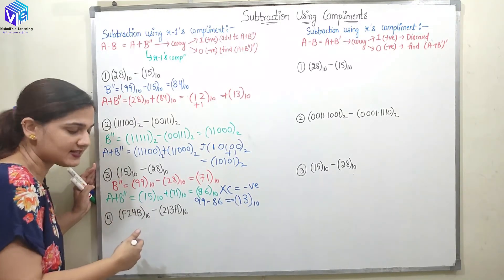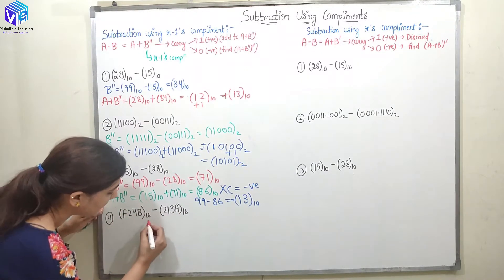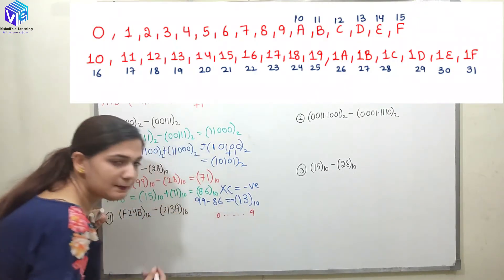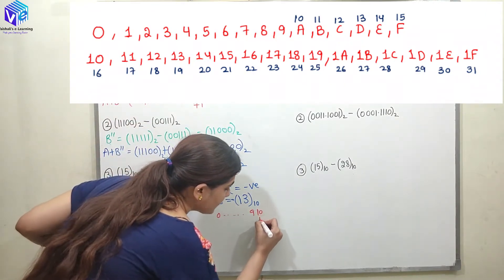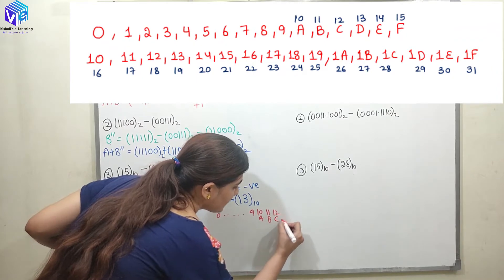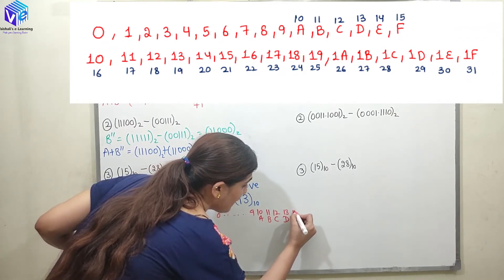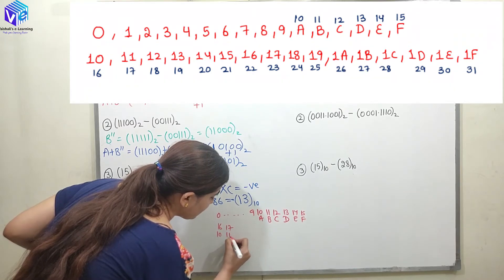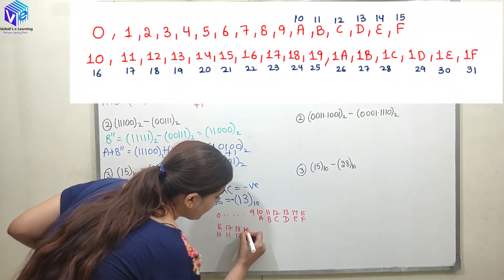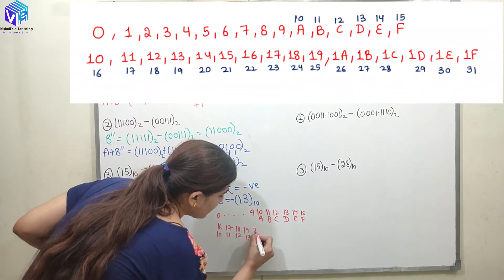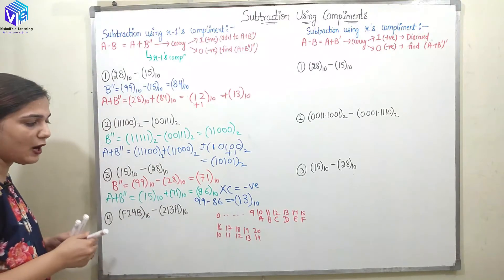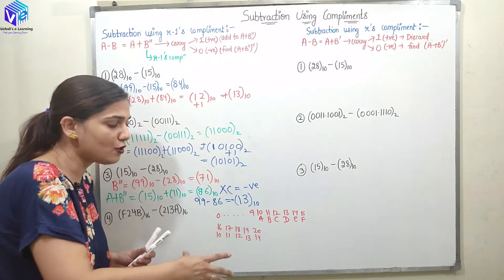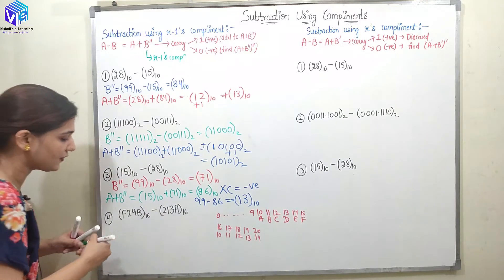Now one example using hexadecimal numbers: F24B minus 213A. Remember that in hexadecimal, 0–9 are represented as is; 10 is A, 11 is B, 12 is C, 13 is D, 14 is E, 15 is F; 16 is 10, 17 is 11, 18 is 12, 19 is 13, 20 is 14. Please write this representation on the side of your notebook so that addition and subtraction becomes really easy for hexadecimal numbers.